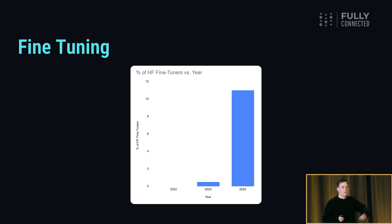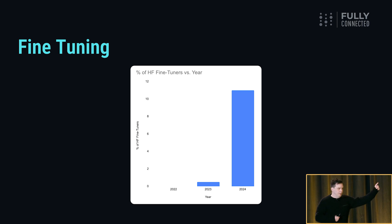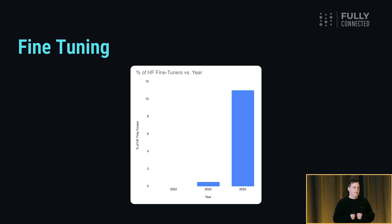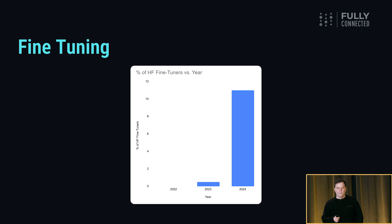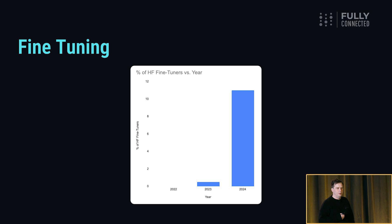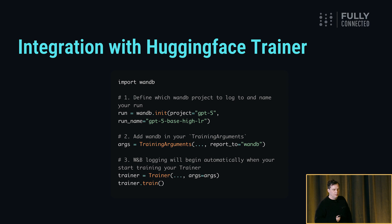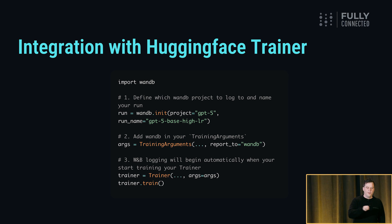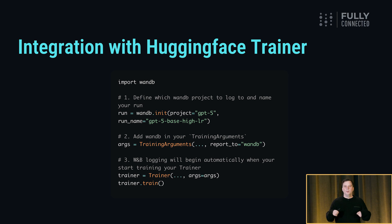There's one more major shift in how ML engineers train their models, and that is fine-tuning. This graph shows the fraction of people using Hugging Face Trainer on our platform: in 2022 nobody used it, in 2023 half a percent of our runs used it, and in 2024 we see 11% of our runs using it — and this is probably a serious underestimate of people doing fine-tuning on our platform. This shows a massive change in the availability and importance of fine-tuning. We integrated deeply with Hugging Face Trainer so you get a lot of value right out of the box, and we love even more when popular tools decide to integrate with us.